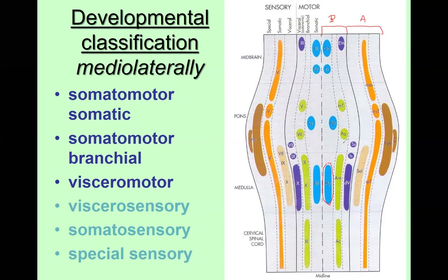A bit laterally are the branchial somatomotor nuclei. We will need the facial nerve and the complex of glossopharyngeal, vagus, and accessory nerve together. They supply the second, third, fourth, and sixth pharyngeal arches. The fifth is not here as it is not developed in humans at all.